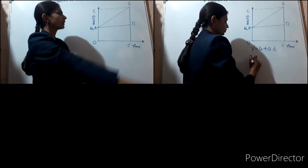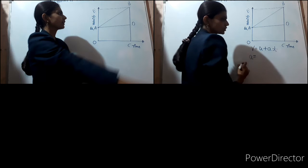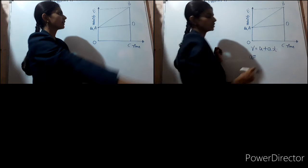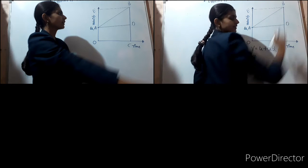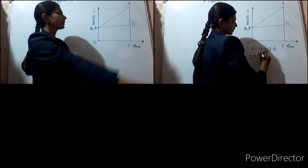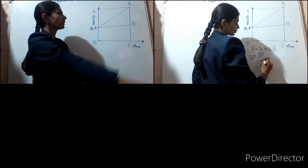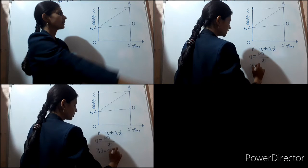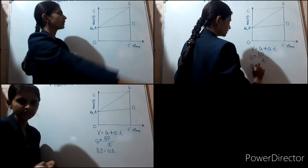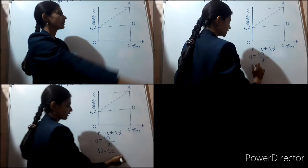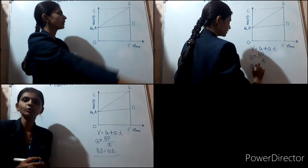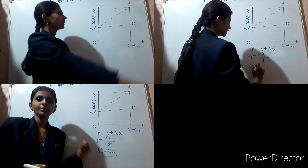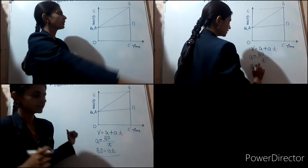Acceleration is denoted by a, where a is equal to change in velocity upon time t. Here the change in velocity is none other than the rise in velocity, that is bd, so bd upon time t. According to this, bd is equal to at. So we have bd is equal to at. Now it is time to put the values into the equation.